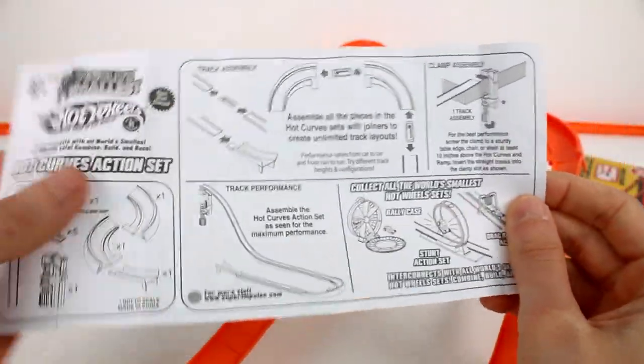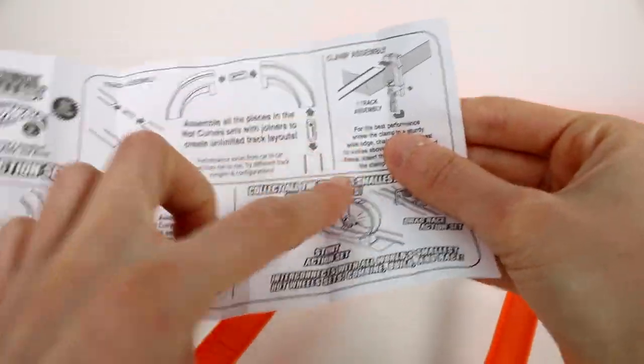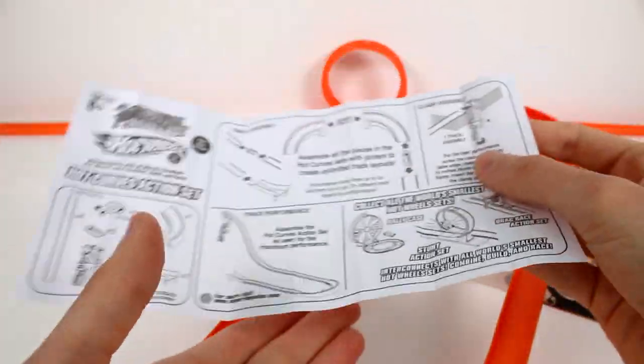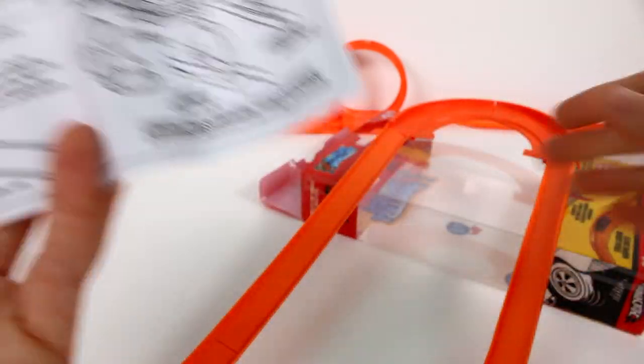Here is the little instruction sheet that you get inside. It tells you all of the contents and then it shows you how to assemble the track. But it's basically up to you how you assemble the track and what shape and pattern or whatever.